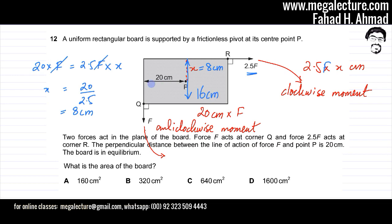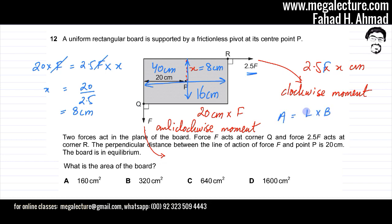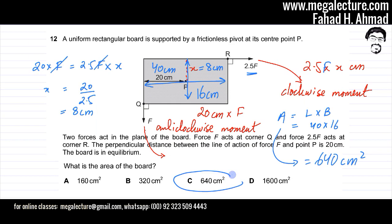And if I double the 20 centimeters, the width comes out to be 40 centimeters. So I have the length and the breadth and I can find the area now. Area = length × breadth = 40 × 16. The final answer for area comes out to be 640 centimeters squared, so the correct answer is option C.